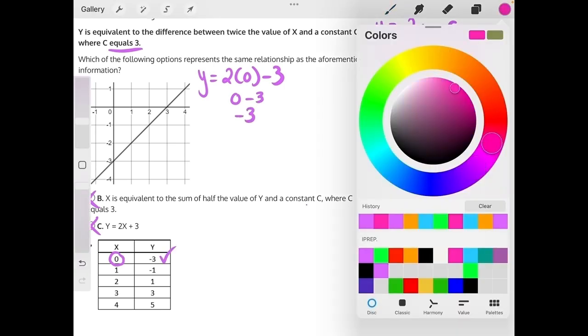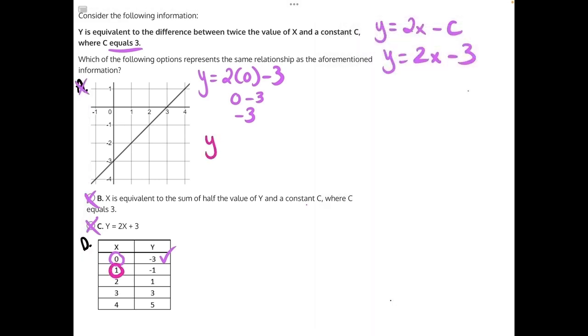Grab a new color and plug in 1. y is equal to 2 times 1 minus 3. 2 times 1 is 2 minus 3 is negative 1, matching the table.